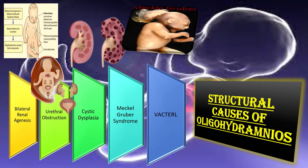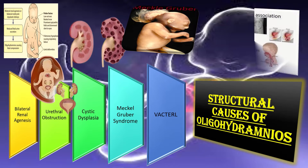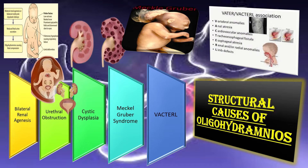Another structural cause is VACTERL syndrome, which is a combination of different anomalies in the fetus including vertebral anomalies, anal atresia, cardiovascular anomalies, tracheoesophageal fistula, esophageal atresia, renal or radial anomalies, and limb defects.